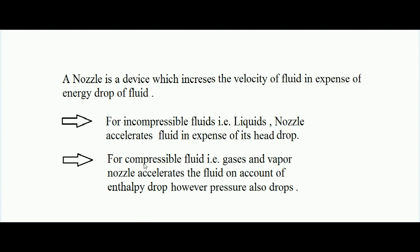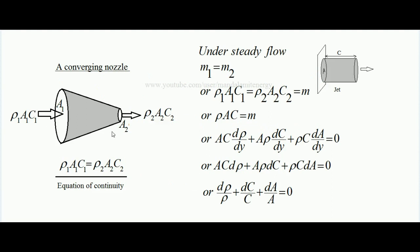This is a picture of a converging nozzle. A converging nozzle is one in which there is a converging duct: at the inlet where the fluid enters the cross-sectional area is higher, and at the outlet it is less — A1 is greater than A2. The continuity equation states that under steady flow conditions, the mass of fluid entering the nozzle equals the mass of fluid coming out per unit time. So ρ1·A1·C1, where ρ1 is the density at entrance, A1 is the cross-sectional area, and C1 is the velocity.